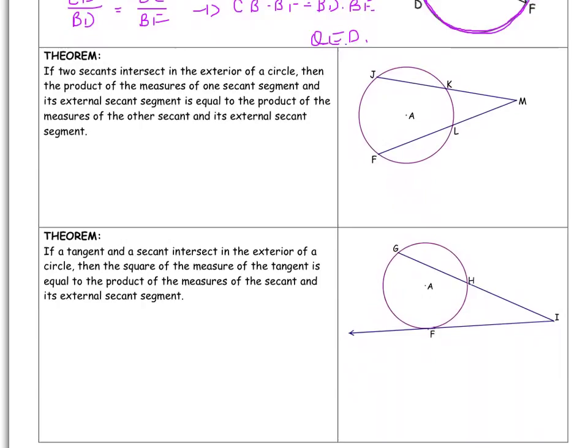But what we're getting at is that if I take one secant segment, so for example JM, if I take the product of that, so multiply JM by the external part, so just KM, that's equal to FM, the entire secant segment, times just the external part for that, which is just LM.